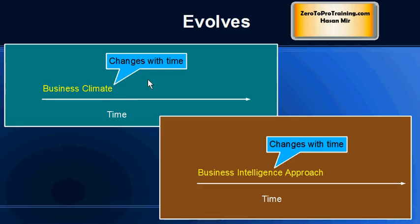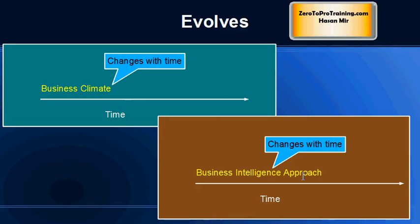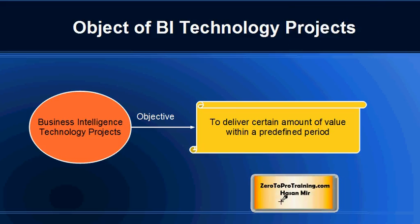The objective of the company is to make profit, but the climate in which the company operates is changing with time, and so do business procedures and the business intelligence approach. It is not something that a company would download and install and say they are set for life. A company would be reevaluating their business intelligence approach regularly to make sure it is at par with the business climate and evolving with time. That is why most BI technology projects aim to provide value within a predefined period of time.